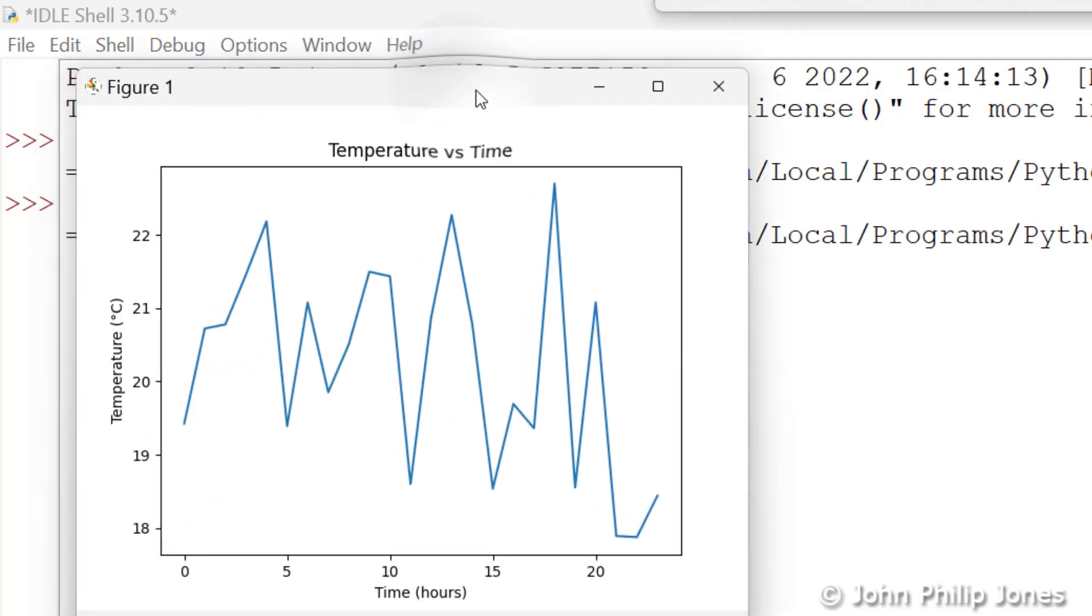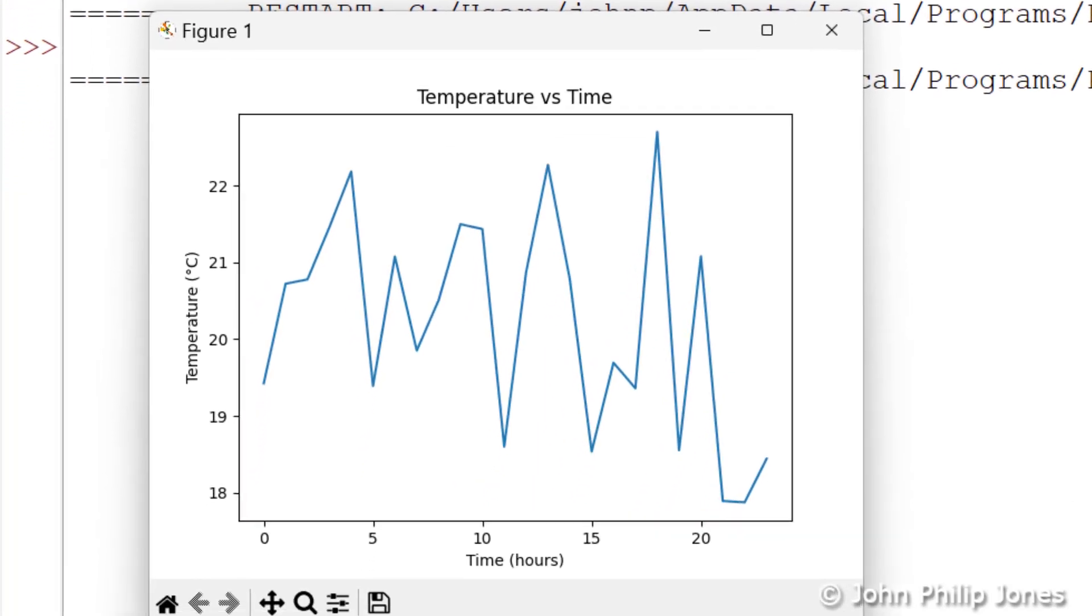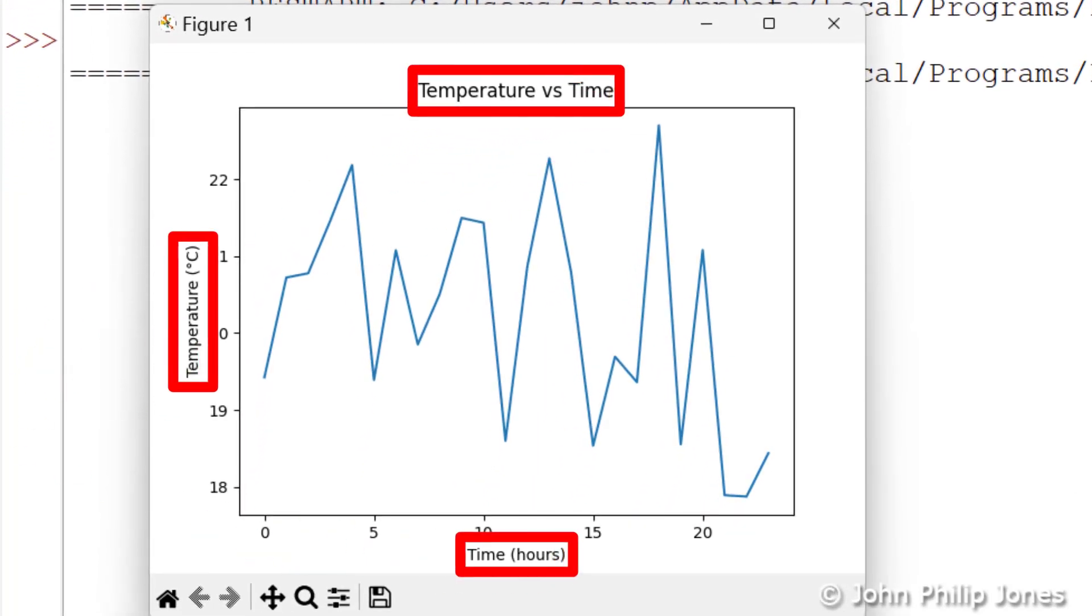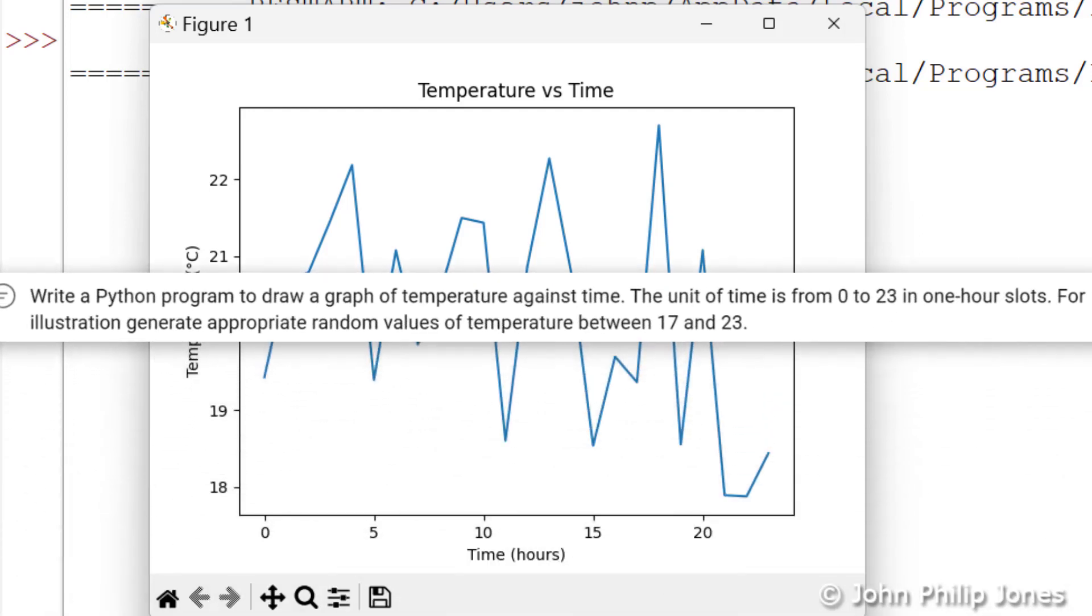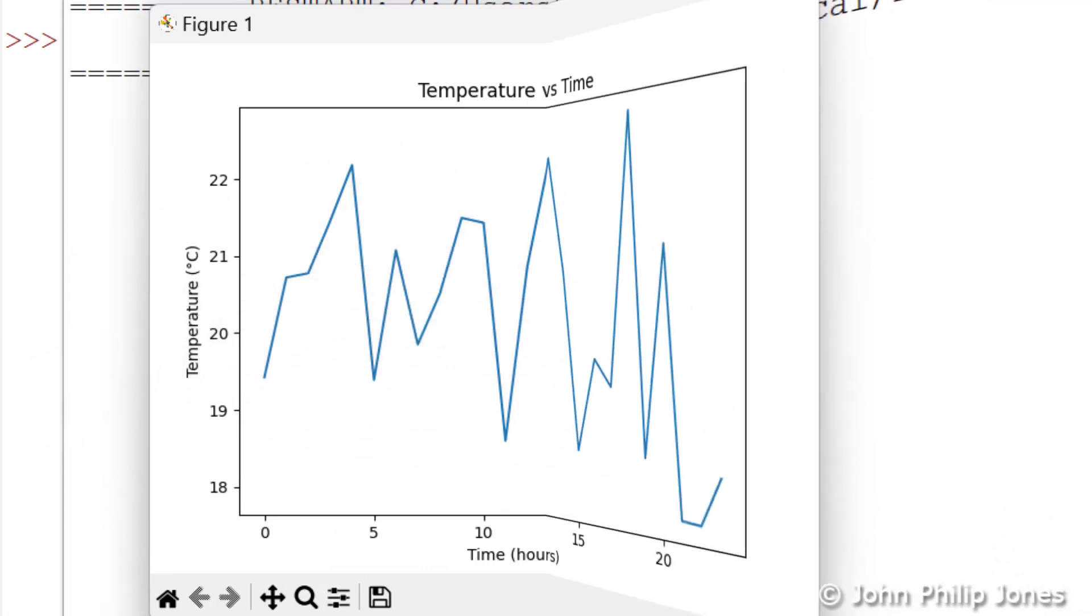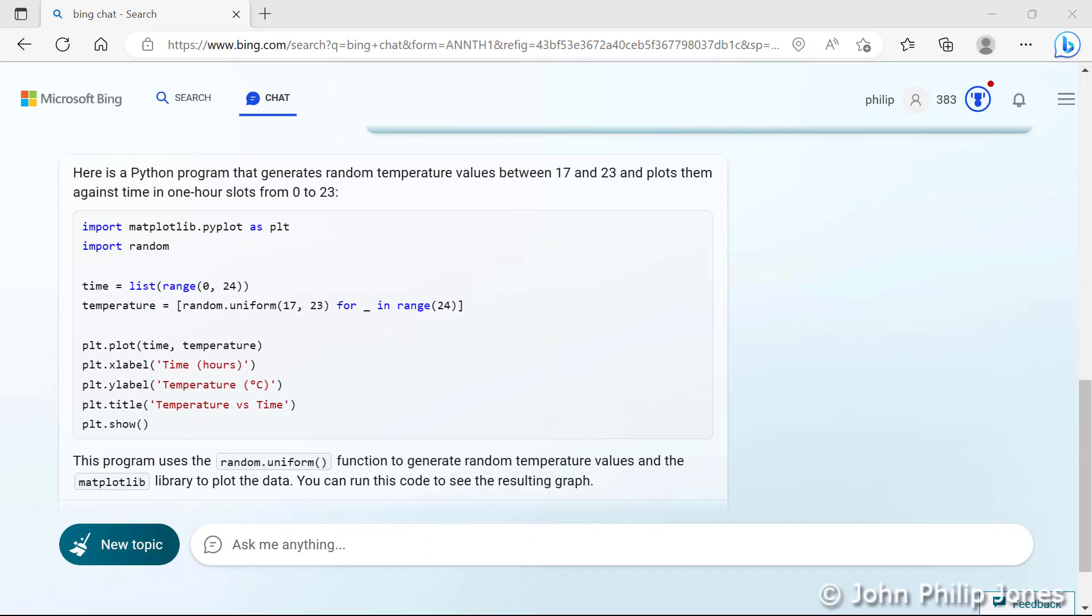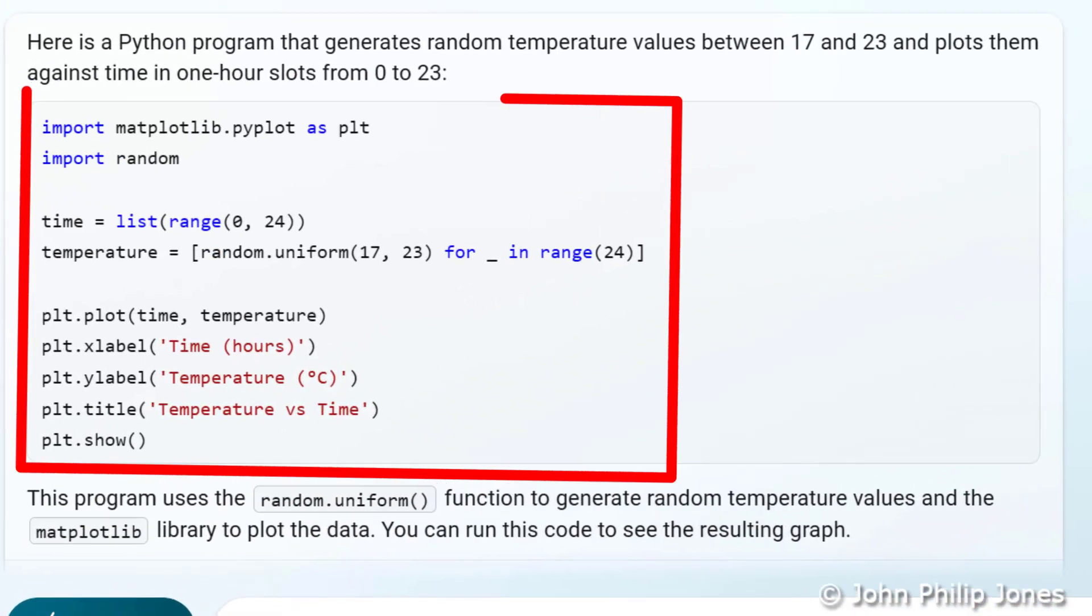And you can see what we have here is a graph of temperature against time. So the computer program written in Python by Bing Chat has done precisely what I wanted it to do. So we can see all I've done here is produced a natural language prompt, given it to Bing Chat, and it's produced a Python program for us. I've gone back to Bing to emphasize this point. You can see it's produced the program.